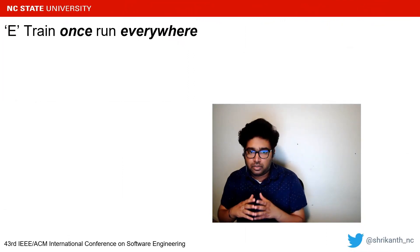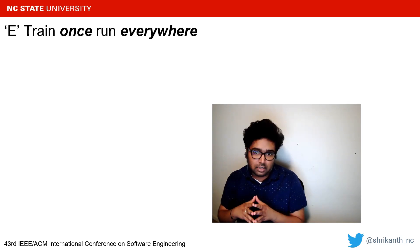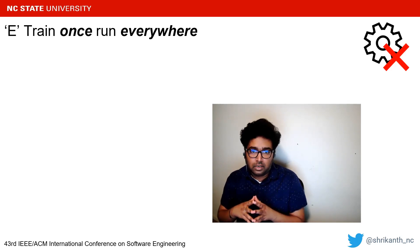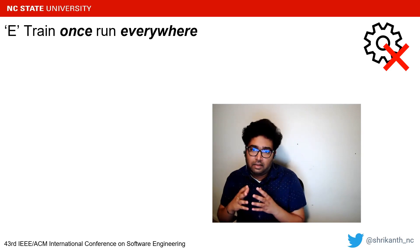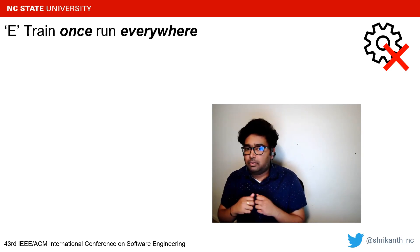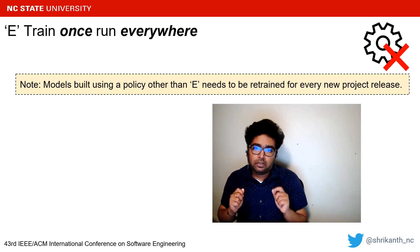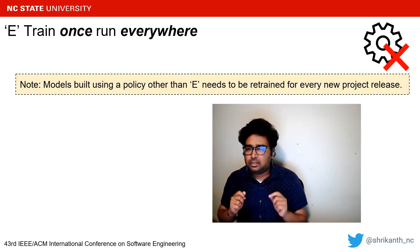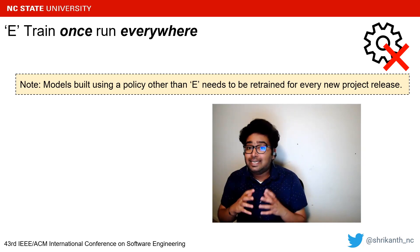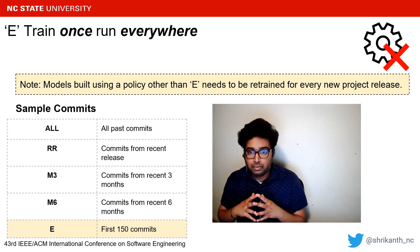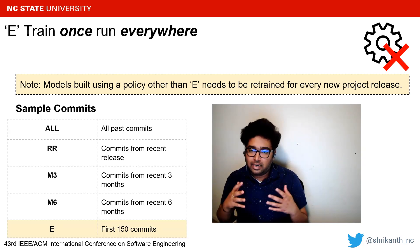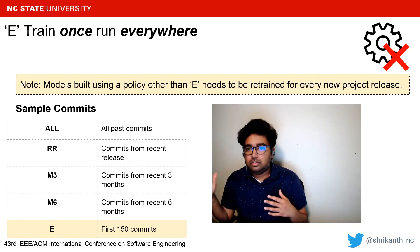Whenever a project has a new release, more committed data is accumulated, so one needs to retrain machine learning models when using data-hungry sampling policies. On the other hand, stop-early policy E uses a fixed number of 50 commits, meaning the model need not be retrained — a huge benefit that enables practitioners to offer stable conclusions across the software lifecycle.